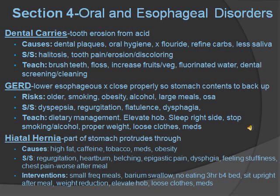Hiatal hernias is when part of the stomach protrudes out. Causes are similar to GERD: high fat, caffeine, tobacco, medications, obesity. Signs and symptoms: regurgitation, heartburn, belching, epigastric pain, dysphagia, feeling of fullness, chest pain — all worse after meals. Tell the patient the same as GERD: eat small frequent meals, no eating 3 hours before bed, sit upright after meals, weight reduction, elevate the head of bed, loose clothing, and medication. Both conditions require stopping alcohol and smoking.